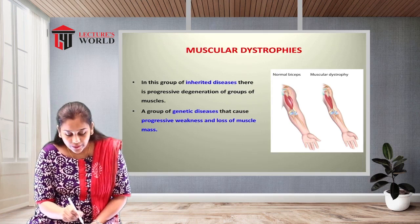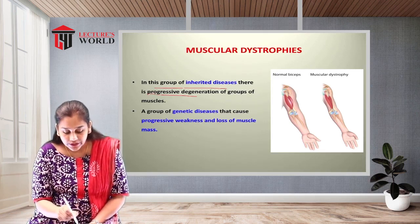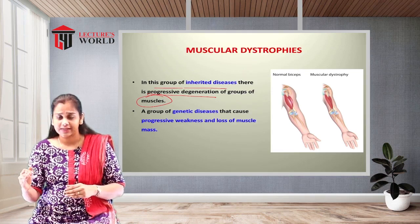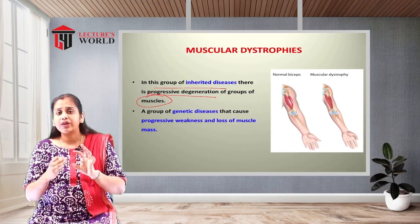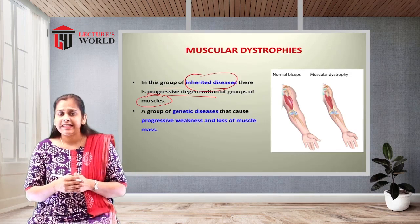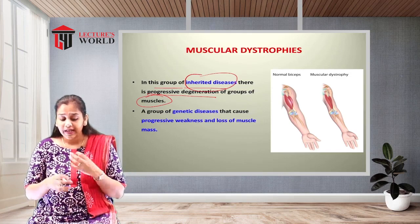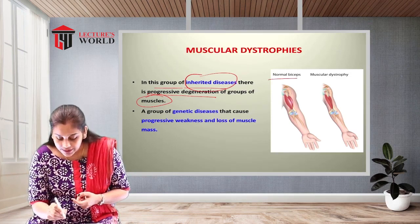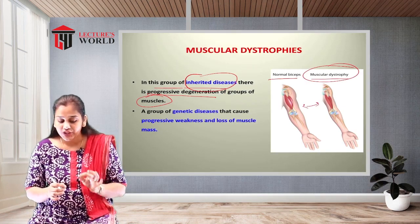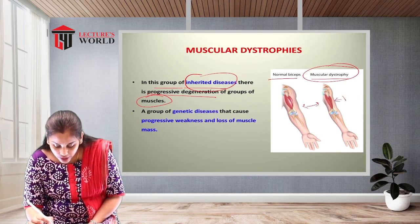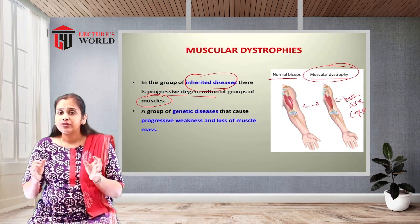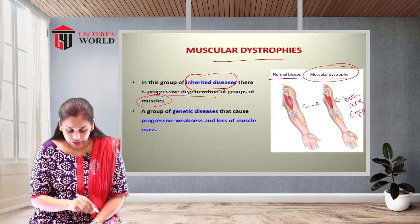In muscular dystrophy, there is a progressive degeneration of a group of muscles. It is a hereditary disease, mostly seen in inherited cases — from grandfather to offspring. As seen in the comparison here, the normal muscle versus the dystrophic muscle shows that in dystrophy, a group of muscles becomes degenerated.